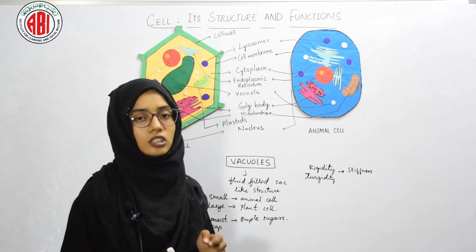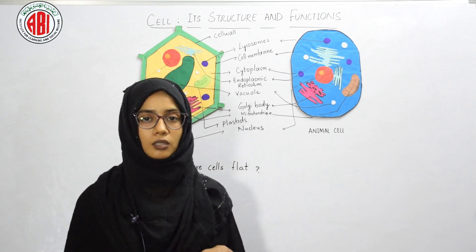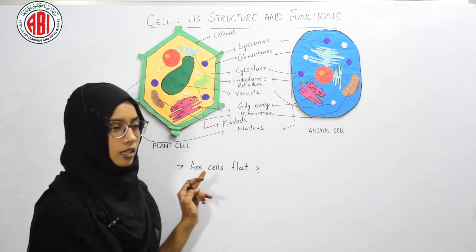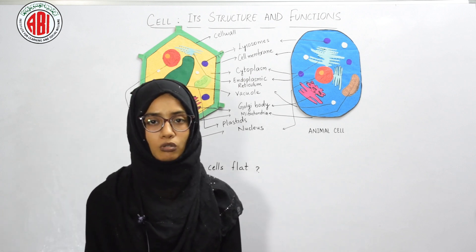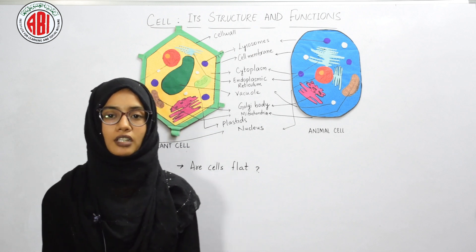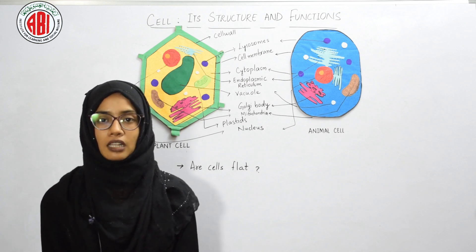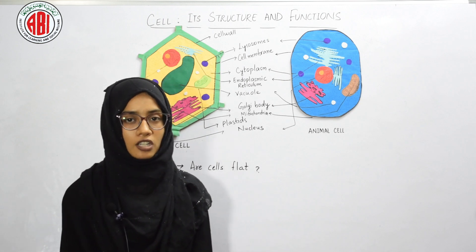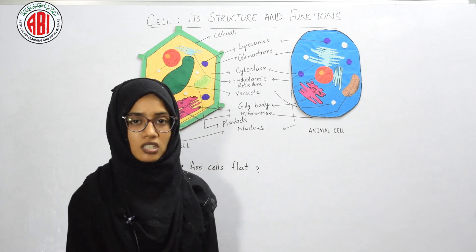After discussing the cell and its parts and functions, one question comes to mind: are cells flat? When we observe a cell under the microscope, it seems that the cells are flat and the cell organelles are arranged in one plane. However, this two-dimensional appearance is not accurate — cells are actually three-dimensional structures, not flat.